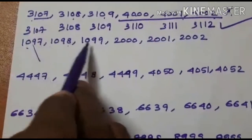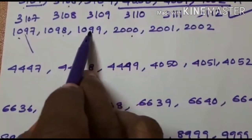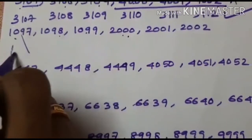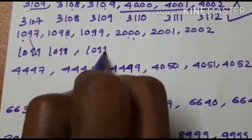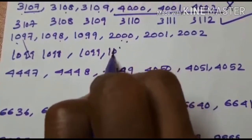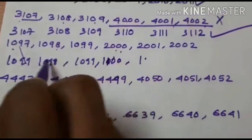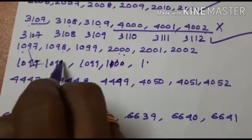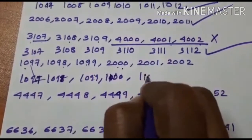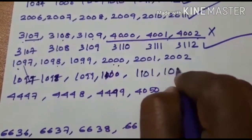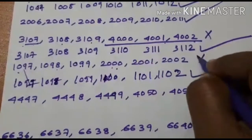Then 1097, 98, 99. After 99 it is 100. Therefore 1097, 98, 99, then 1100, 1101, 1102. This is the corrected pattern. This is wrong.